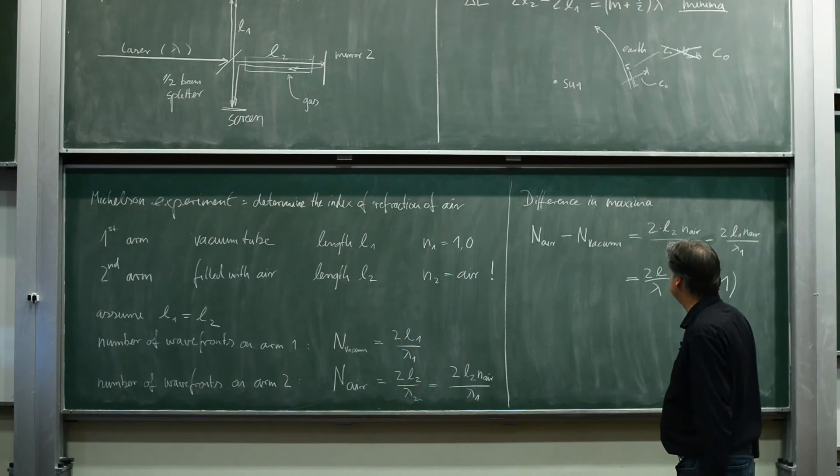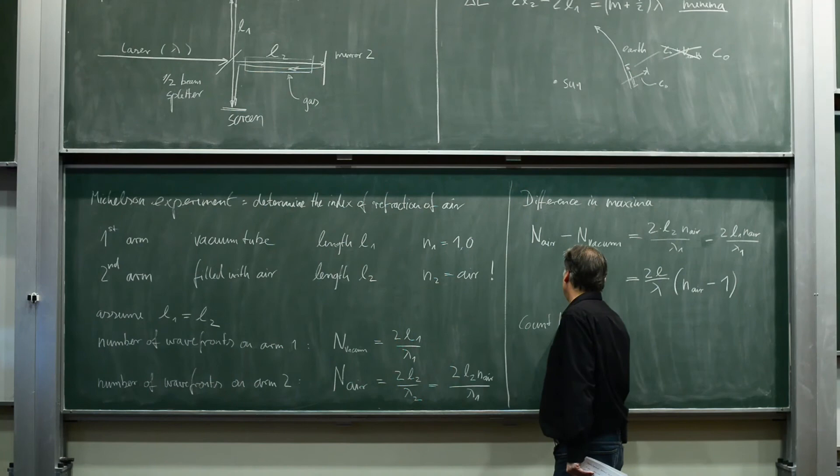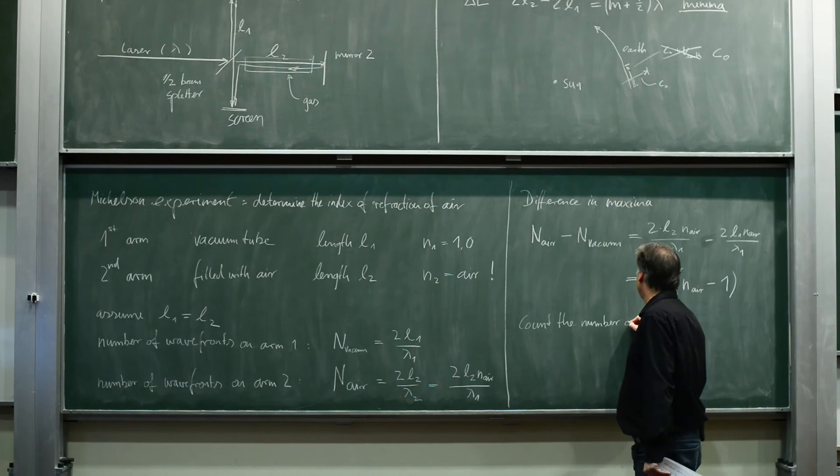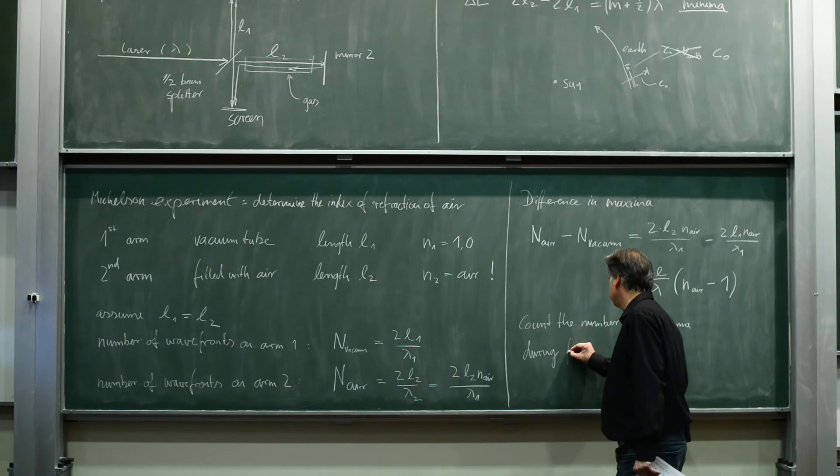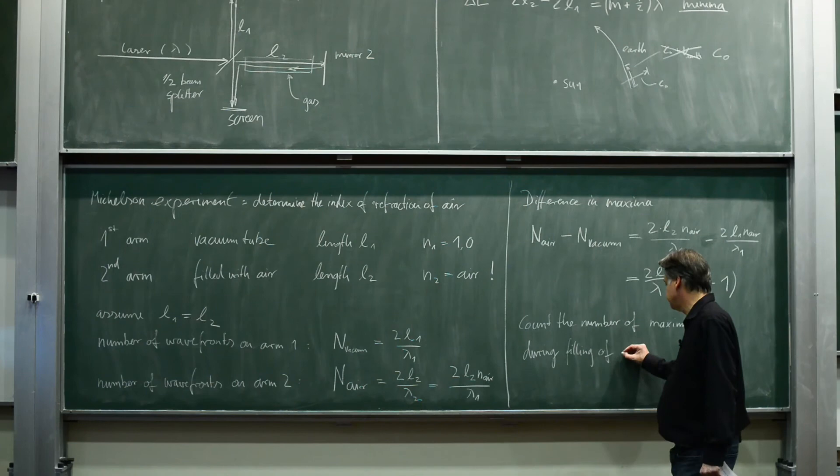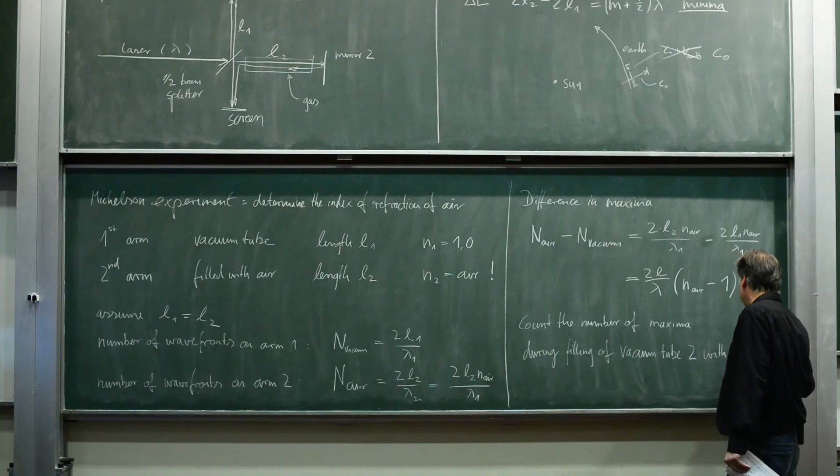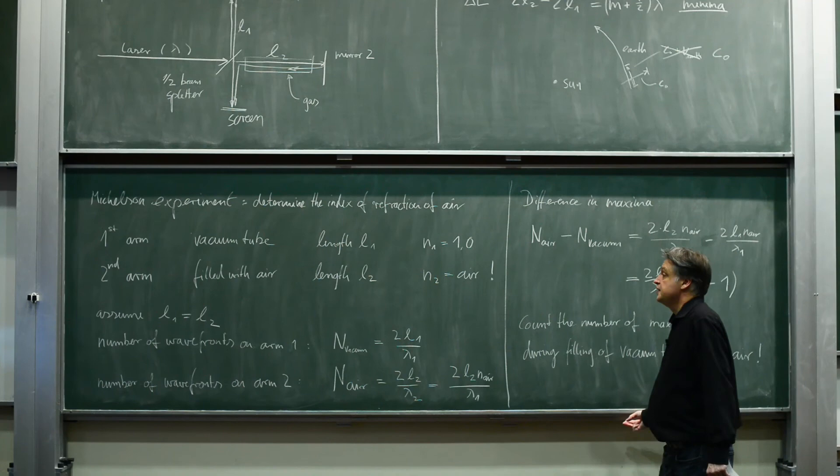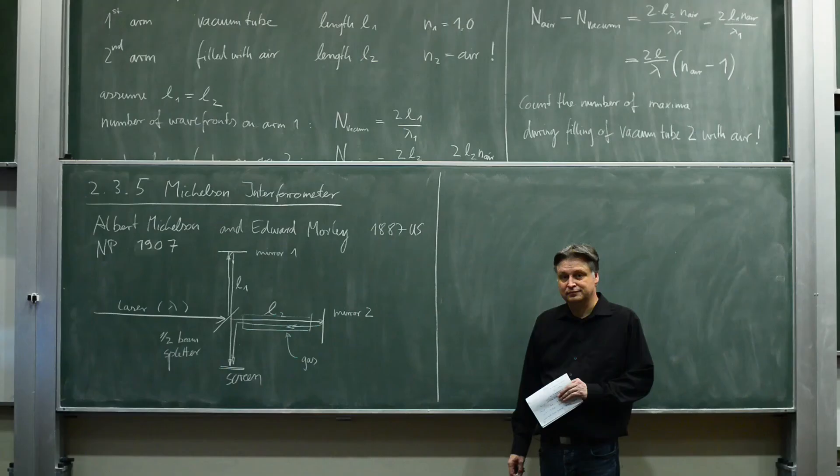So what we have to do in the end, we need the length of our arms and we have to count the number of maxima. Count the number of maxima during filling of vacuum tube 2 with air. So let's calculate that. Quick interruption again, I'm using these quick interruptions actually to clean the board. Now, a real experiment.